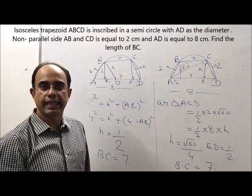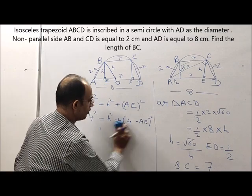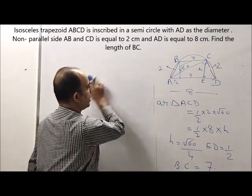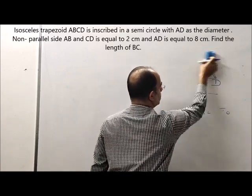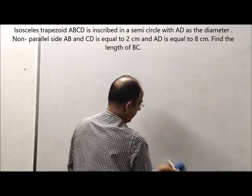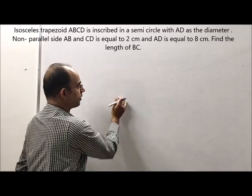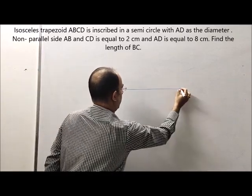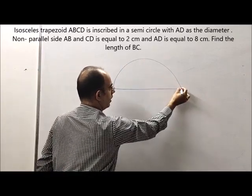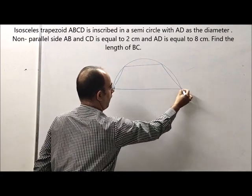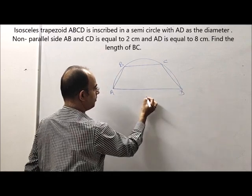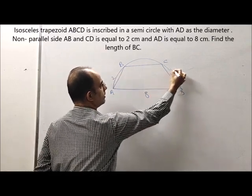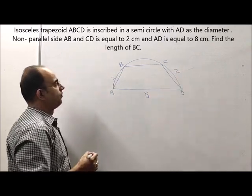Now this was the second method. We can also solve this question by one more method which requires memorization of a theorem. Again, let ABCD be the isosceles trapezium. This is 8, this is 2, and this is 2. We need to find the length of BC.